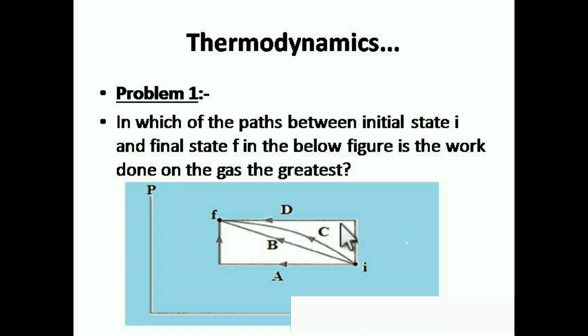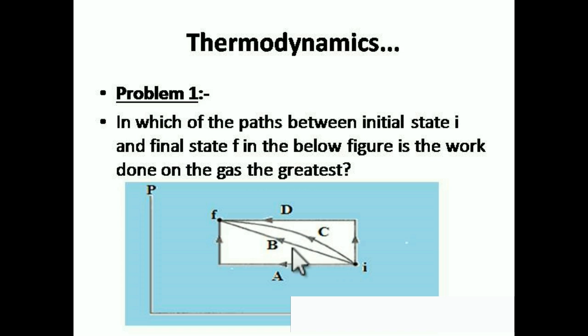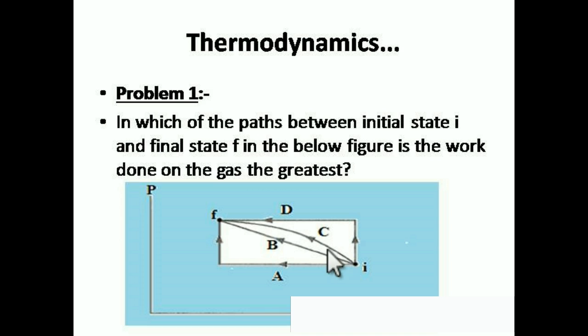We have to find in which process the work done is greatest. As I taught in previous videos, work done and heat are both path functions — they depend on the path taken. Internal energy, however, is a point function — it depends only on the state. Going from I to F, internal energy does not change because it is the same at point F for all paths A, B, C, and D.